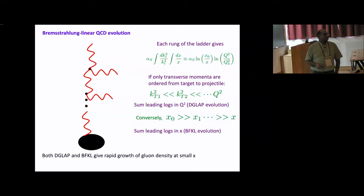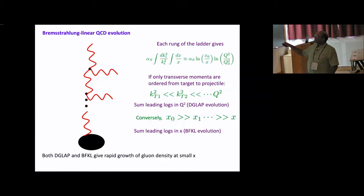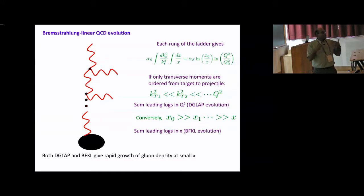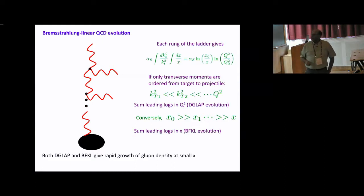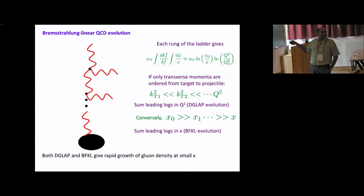DGLAP evolution consists of keeping strong ordering of emitted partons in kT: kT1 < kT2 and so on, ordered up to Q². The corresponding equations describing how cross sections change when you add further rungs yield the DGLAP evolution. When you go to very small x — say 10⁻⁵ — the logs in x can be larger than the logs in Q². You then organize Feynman diagrams keeping terms that are leading in αs × log(x), yielding a similar renormalization-group evolution called the BFKL equation.